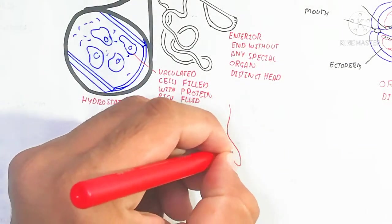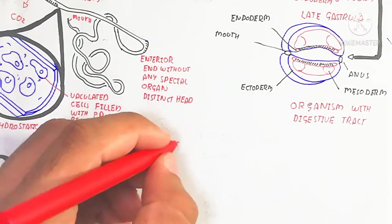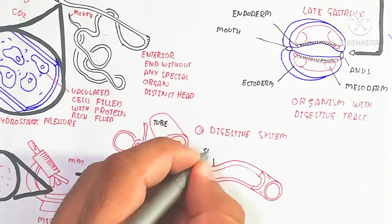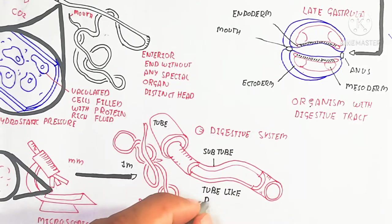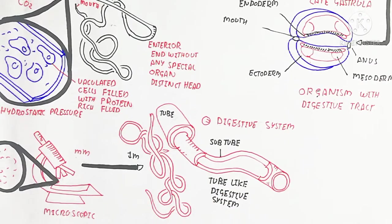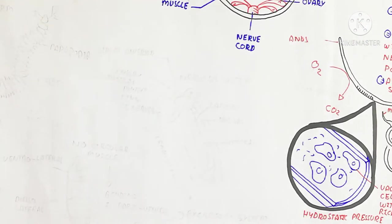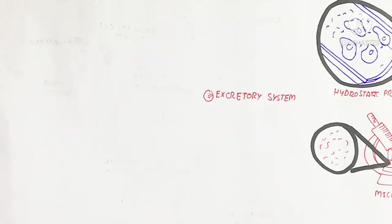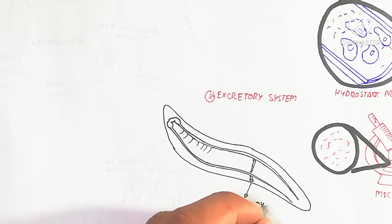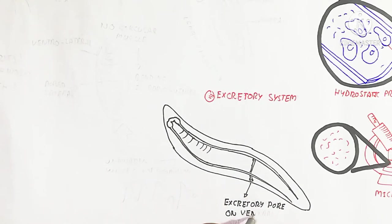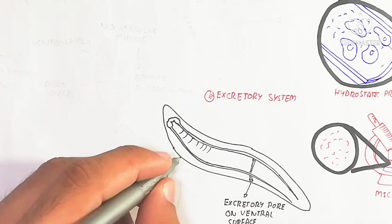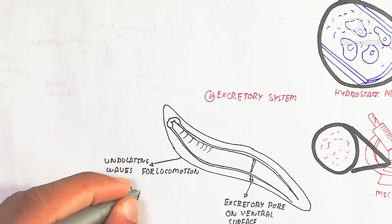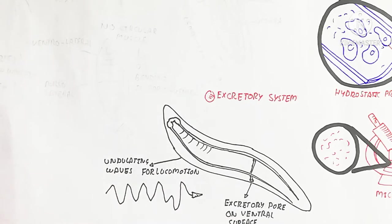There is no special organ; a distinct head is present and oxygen is used to produce carbon dioxide from the skin. The nematode ranges from microscopic micrometers to a macroscopic one meter in length. It has a tube-like structure with muscular longitudinal muscles and lateral muscles, but no circular muscles. The undulating waves result from muscle contraction. The digestive system is a tube-like structure, not well developed as it depends on the host to absorb food.